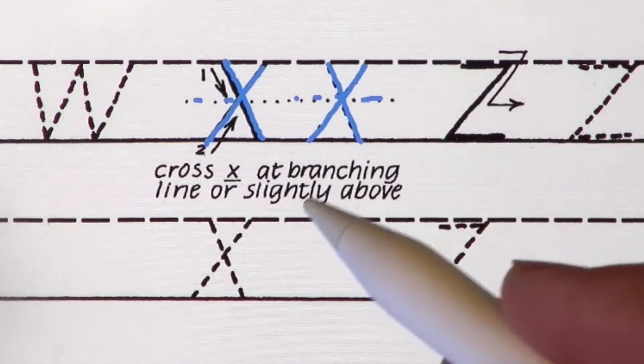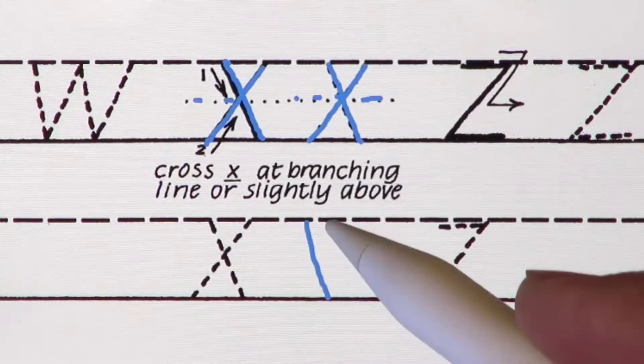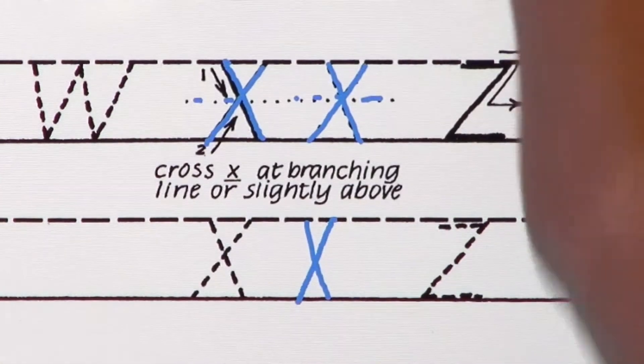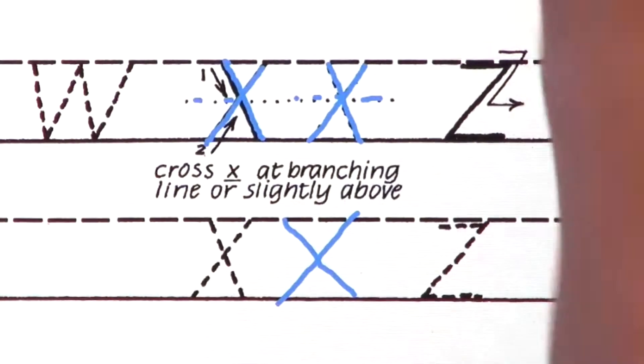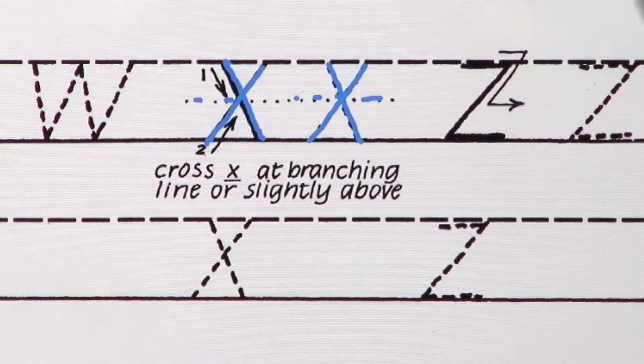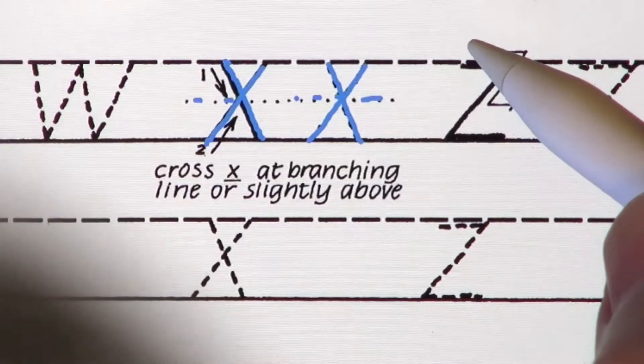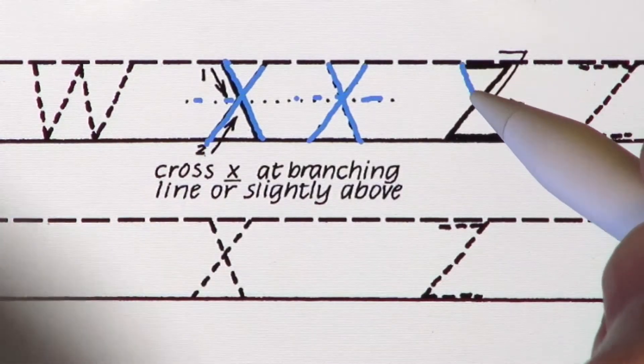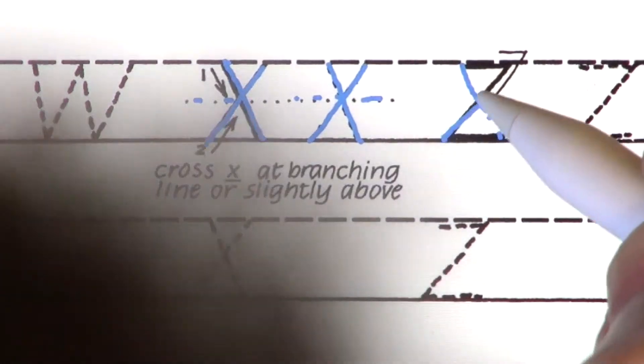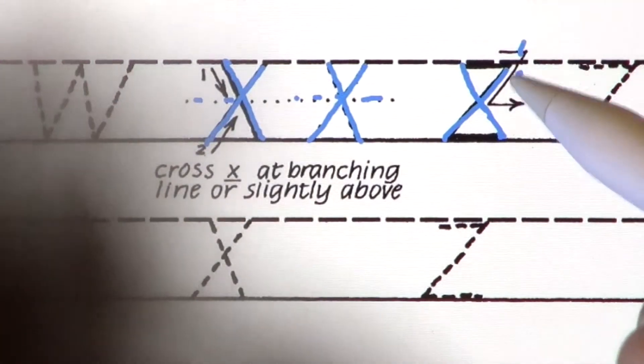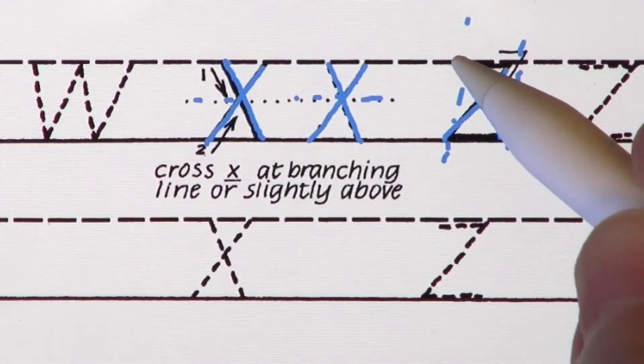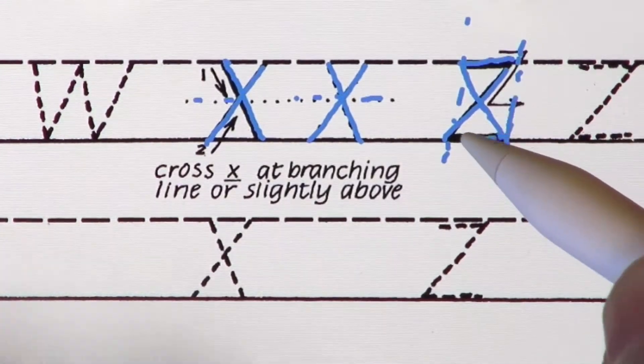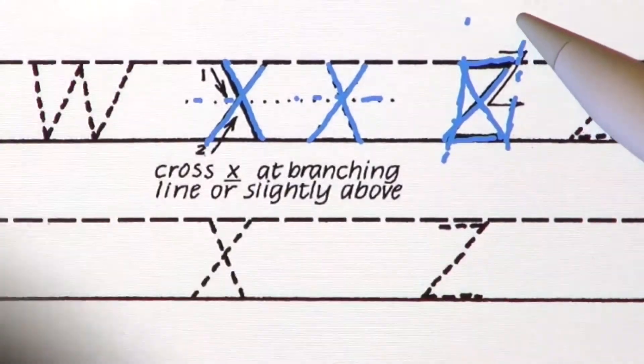Some things to watch out for. We want to make sure the letter is not too narrow and not too wide. How do we tell how wide it should be? Well, one way to think about it is to superimpose it over the Z. And as you can see, the strokes line up exactly with the size of the Z and creates this nice golden rectangle.